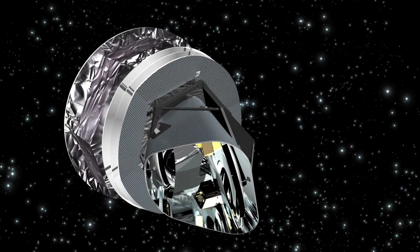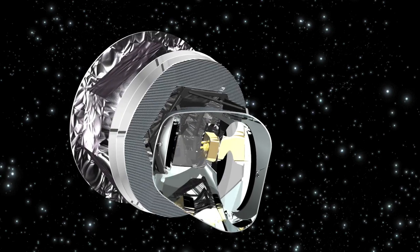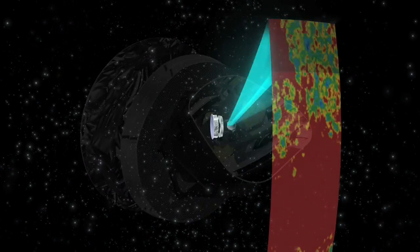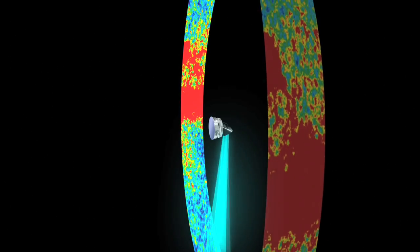The Planck spacecraft spins once a minute and as it does, the field of view sweeps a ring of 170 degrees in diameter. Planck can scan the entire sky in six months.